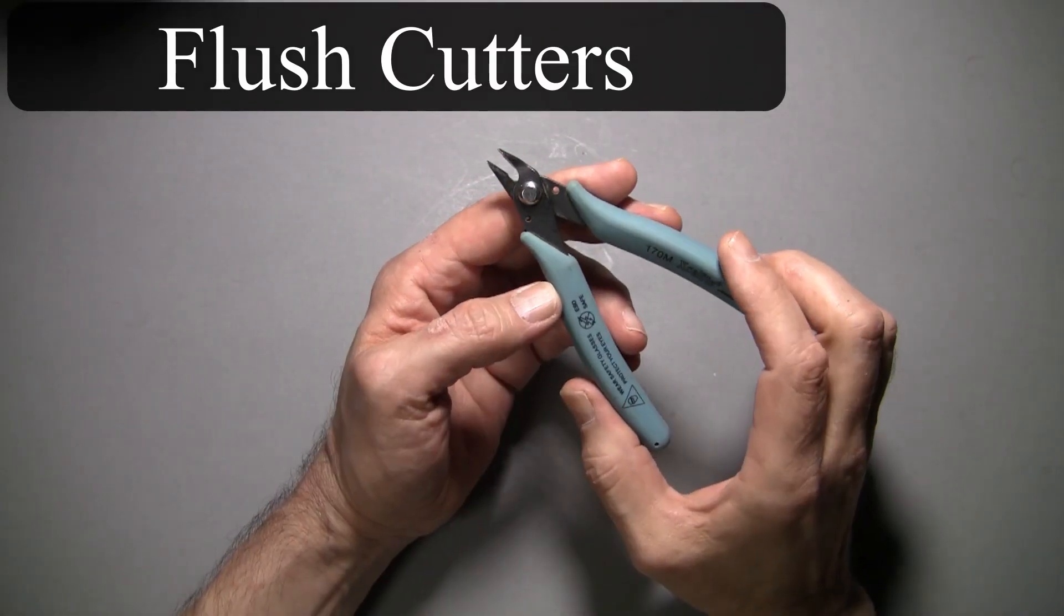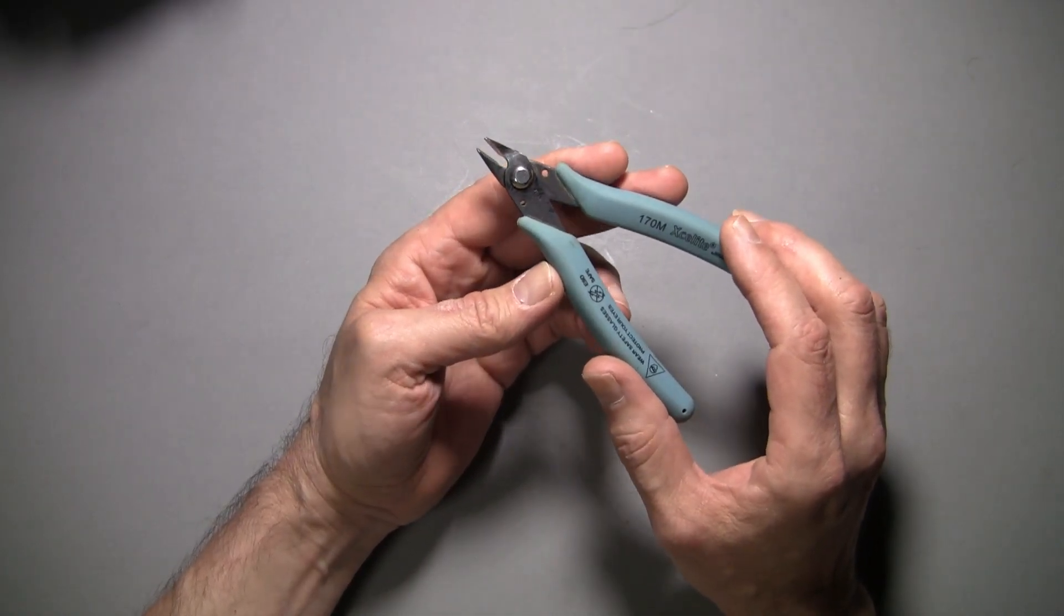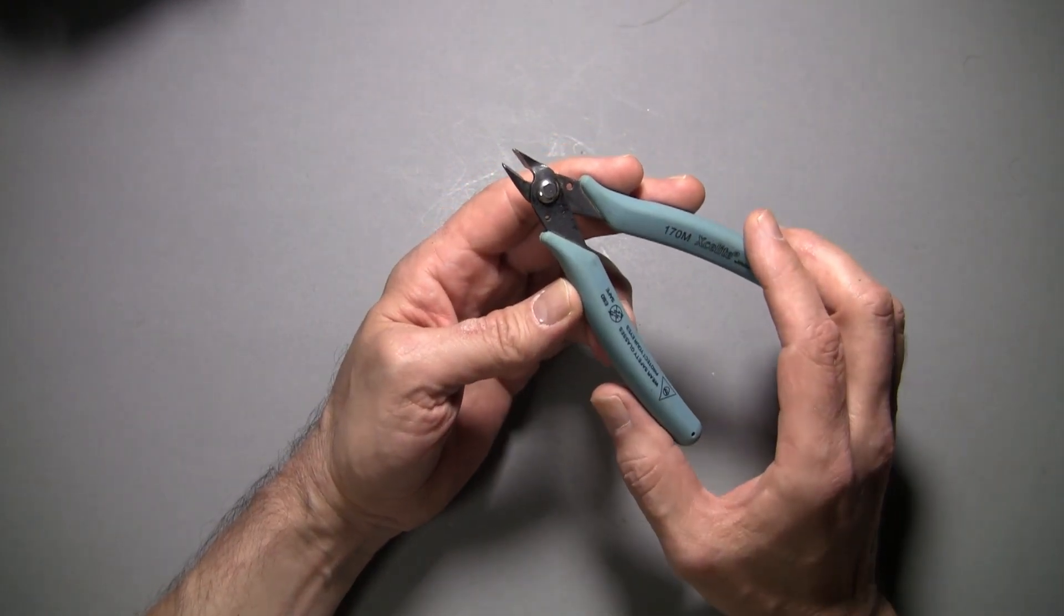Flush cutters, diagonal cutters. I call them nippies. Definitely needed for circuit board work, and I also like to use them to clean up the ends of wires when I'm soldering connectors.